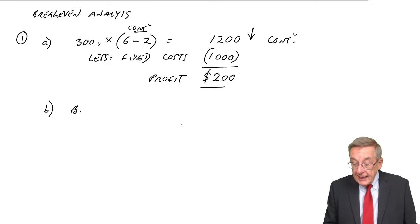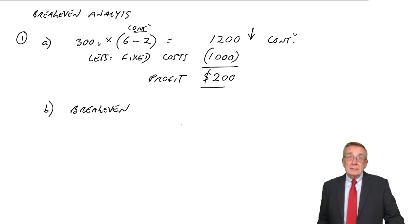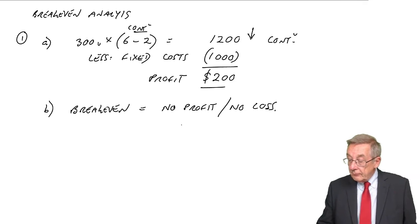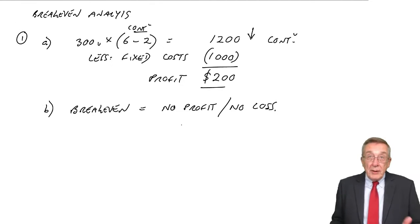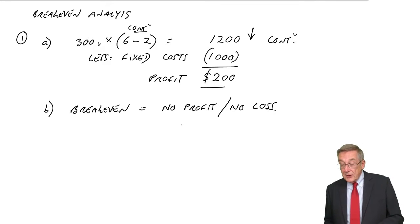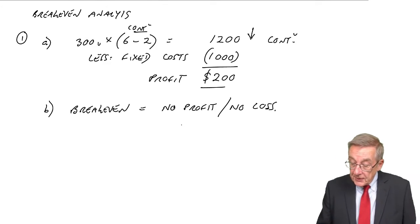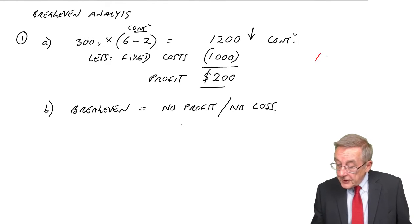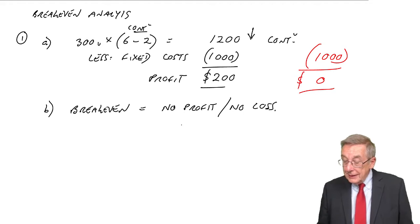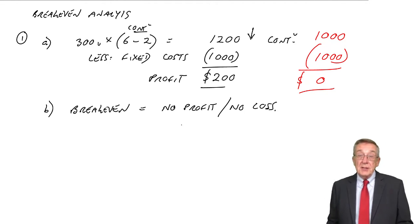Part B asks us for the break-even point. Break-even, by definition, is when we make zero profit, zero loss. So if we're wrong on our budget, and it's not 300 units, but we end up selling less, how many do we need to sell to end up with no profit and no loss? Well, surely, think about it, whatever happens, the fixed costs are going to be $1,000. To end up with a profit of zero, the contribution will have to be $1,000 as well.